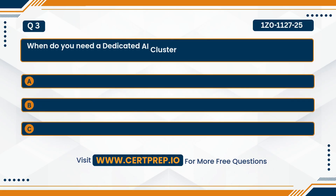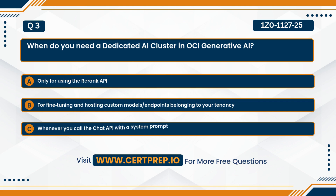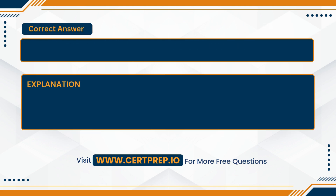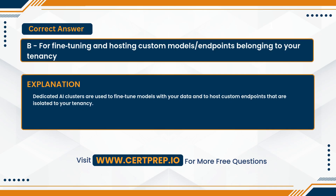Question three. When do you need a dedicated AI cluster in OCI Generative AI? A. Only for using the Rerank API. B. For fine-tuning and hosting custom models and endpoints belonging to your tenancy. Or C. Whenever you call the chat API with a system prompt. The correct answer is B — for fine-tuning and hosting custom models and endpoints belonging to your tenancy. Dedicated AI clusters are used to fine-tune models with your data and to host custom endpoints that are isolated to your tenancy.